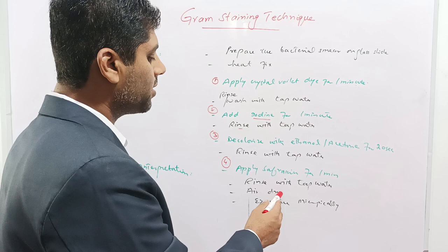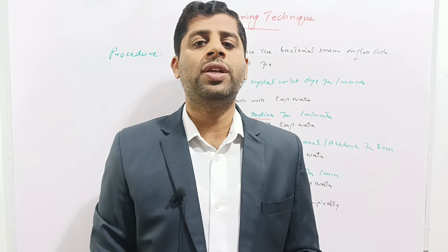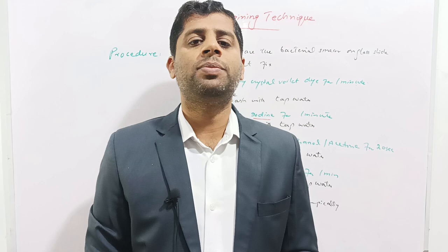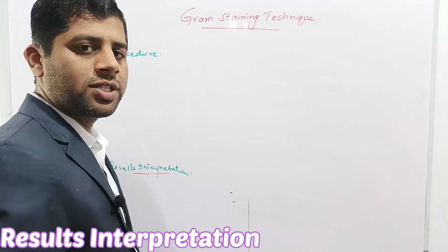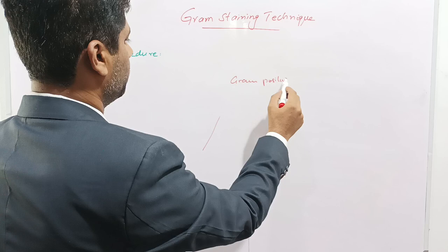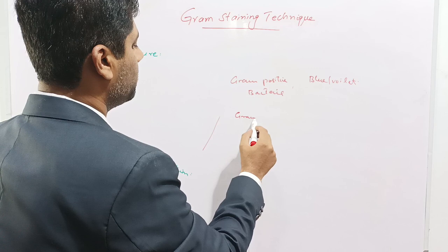In summary, the bacterial smear is prepared on a glass slide, heat fixed, and four reagents — crystal violet, iodine, ethanol, and safranine — are applied sequentially. After each step, the glass slide is rinsed with tap water. The slide is then air dried and examined microscopically for diagnosis and differentiation of bacteria. Result interpretation: Gram positive bacteria appear blue or violet due to the principal stain crystal violet, while Gram negative bacteria appear pink or red due to the counterstain safranine.